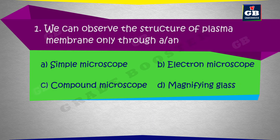We can observe the structure of plasma membrane only through a: a) simple microscope, b) electron microscope, c) compound microscope, d) magnifying glass.